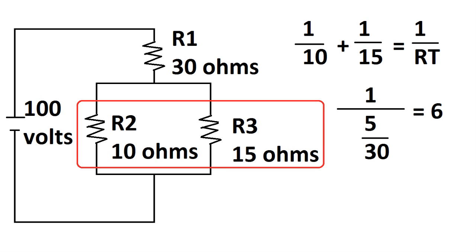We're going to find the sub-RTs, or resistance totals. We're going to take resistor 2 and resistor 3 and find the RT for that. We take 1 over 10 plus 1 over 15, and this equals 1 over RT. Recall this is parallel, and this is how parallel works. So we take 5 over 30, and this gives us 6 ohms resistance total.